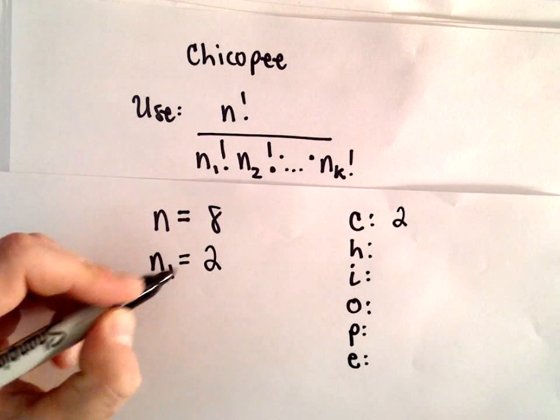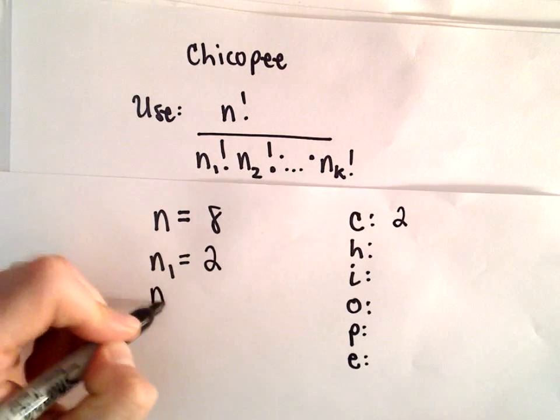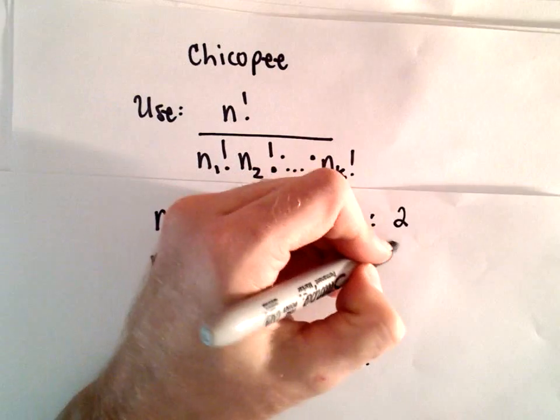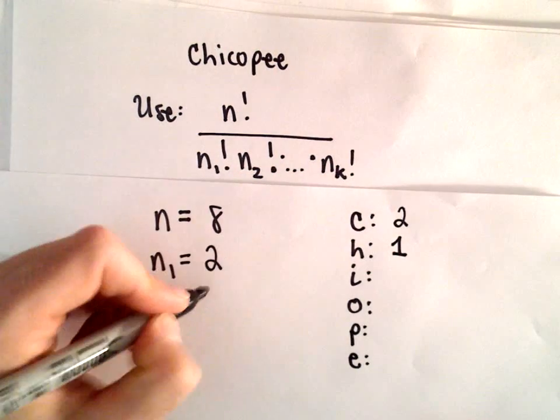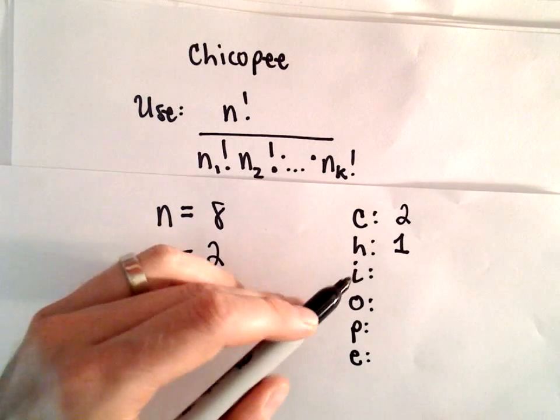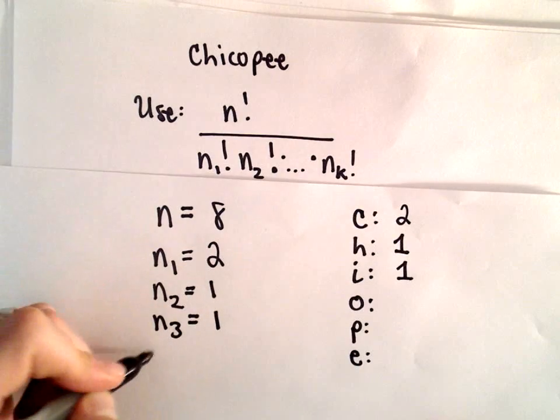So we'll say n sub 1 equals 2. That's the number of Cs that are present. n sub 2, that'll be the number of Hs. Well, we only have one H present. n sub 3, that's going to be the number of Is, which is just 1. And we just keep doing this.